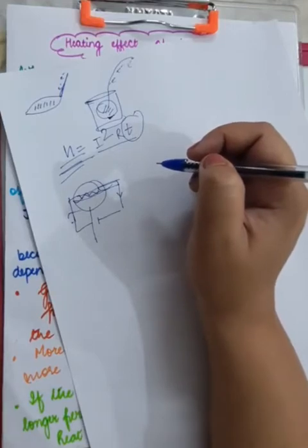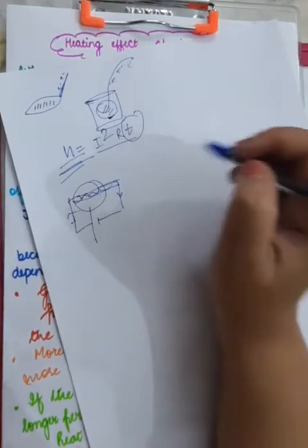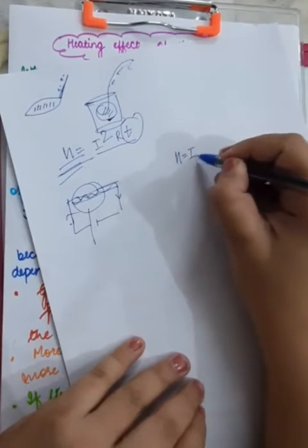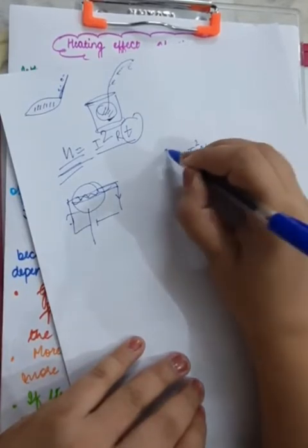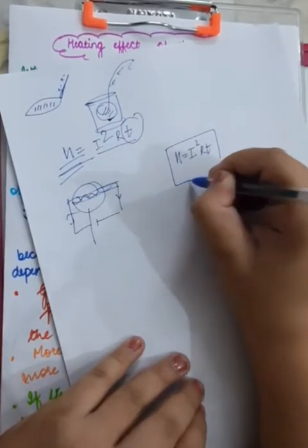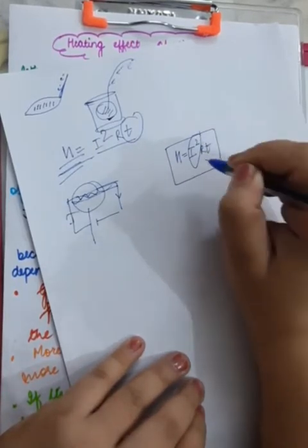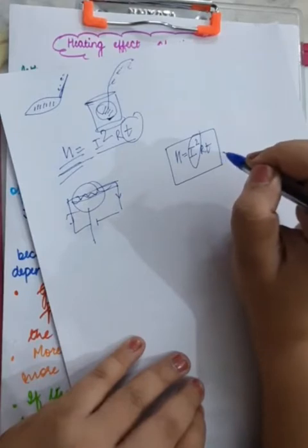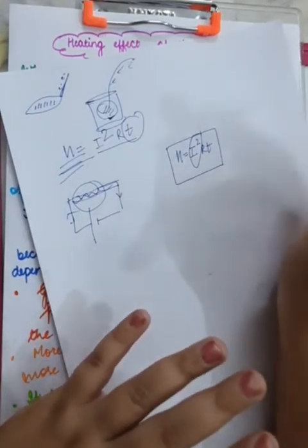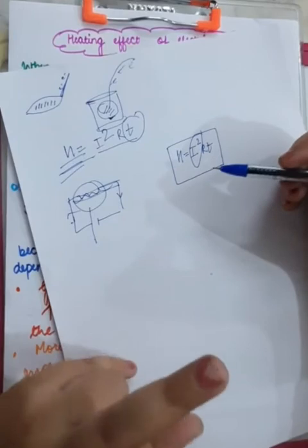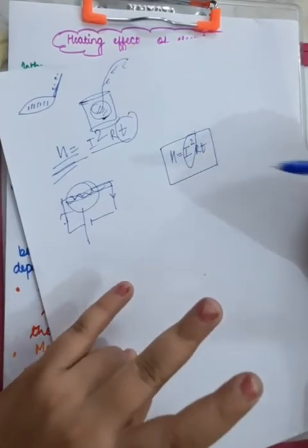So, overall heat produced is also dependent on the time for which the electric current is passed. So, these are the three factors over which heat produced depends. That's known as Joule's law of heating. H is equal to I square RT. The derivation is not there in the syllabus. That's why I cannot tell you that why I square is being used.